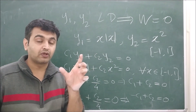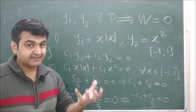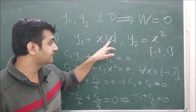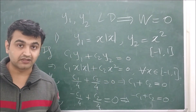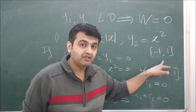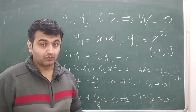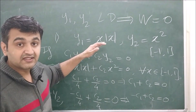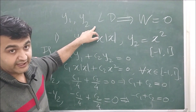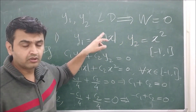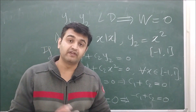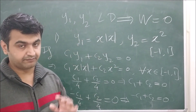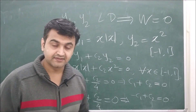Note that on the interval (1, 3), x is positive so |x| = x, making y1 = x² = y2, which means they would be dependent there. This shows the interval matters enormously. So Wronskian = 0 does not imply dependence — that is a counterexample to the converse.